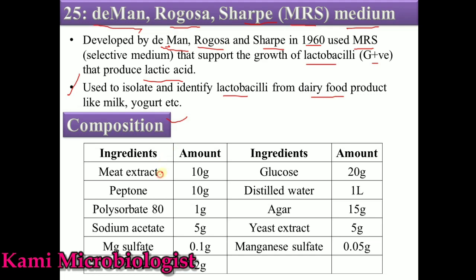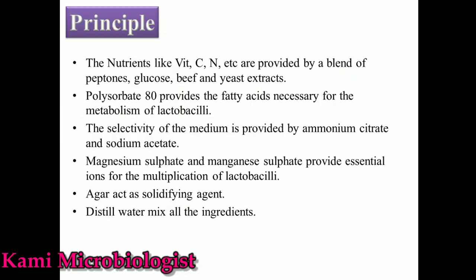Let's talk about the composition of this medium. This medium contains: meat extract 10 gram, peptone 10 gram, polysorbate 80 1 gram, sodium acetate 5 gram, magnesium sulfate 0.1 gram, dipotassium phosphate 2 gram, glucose 20 gram, distilled water 1 liter, agar 15 gram, yeast extract 5 gram, and manganese sulfate 0.05 gram.